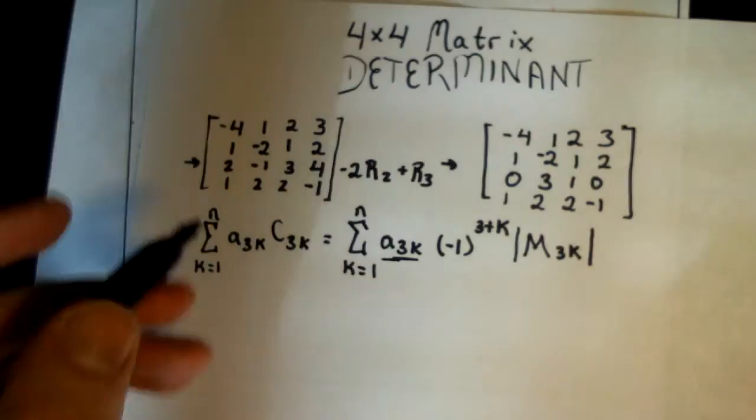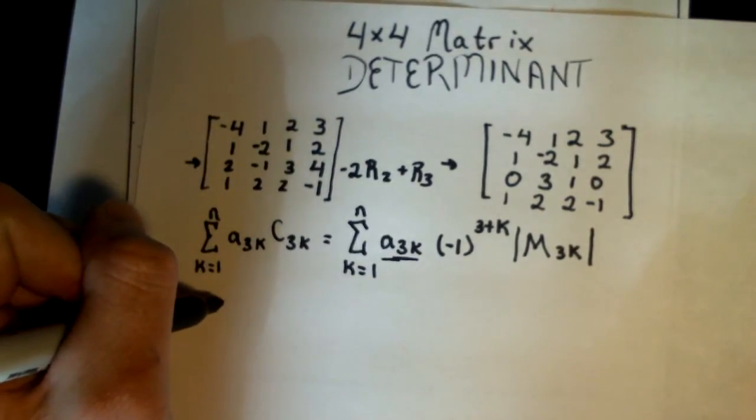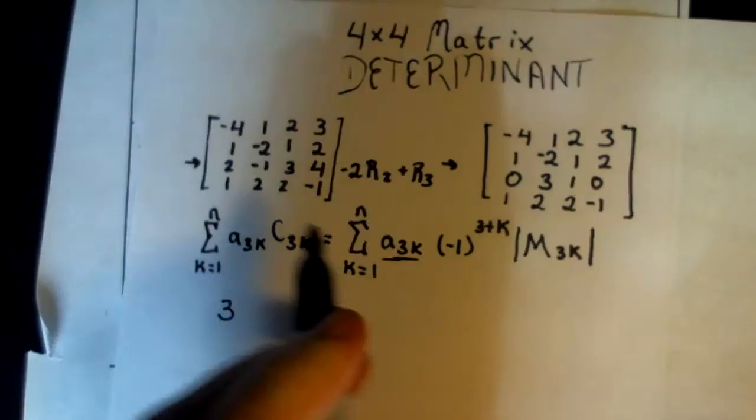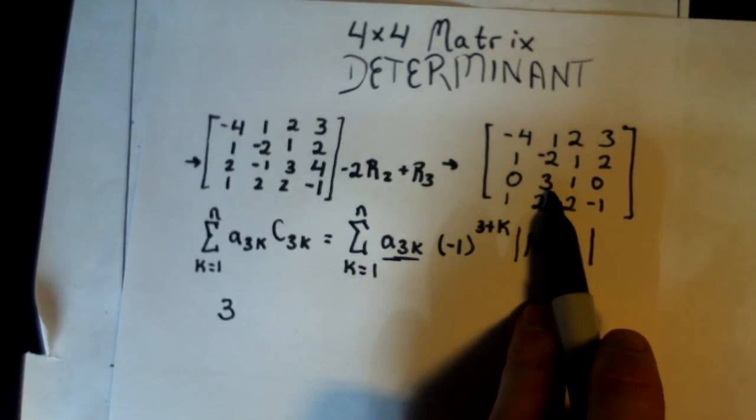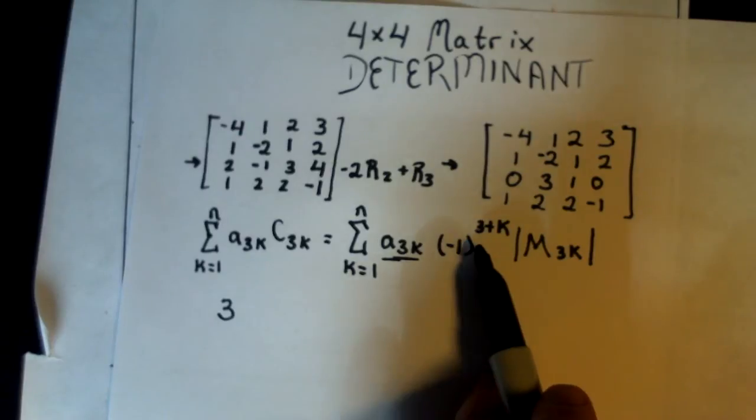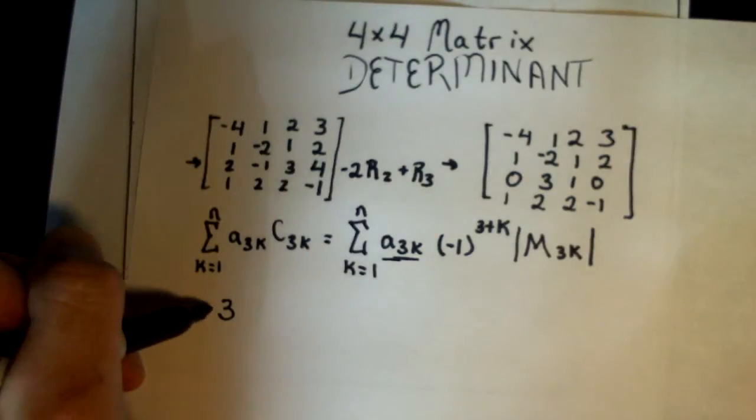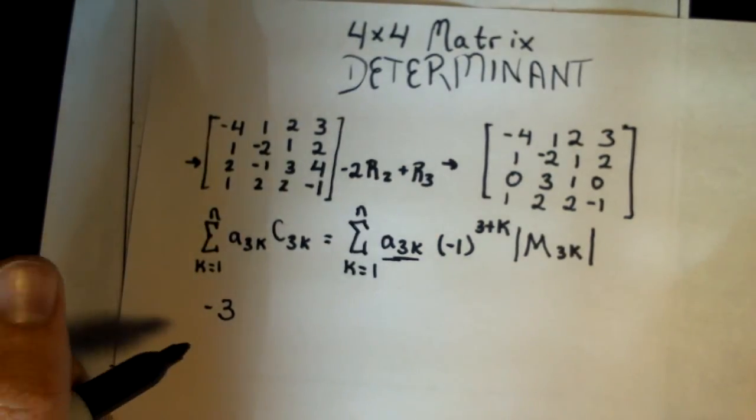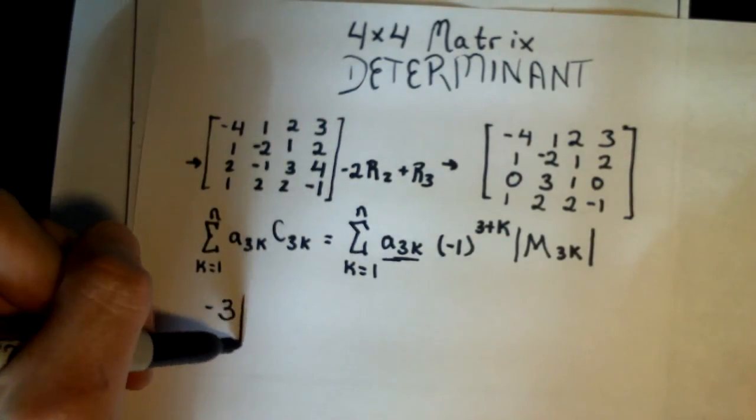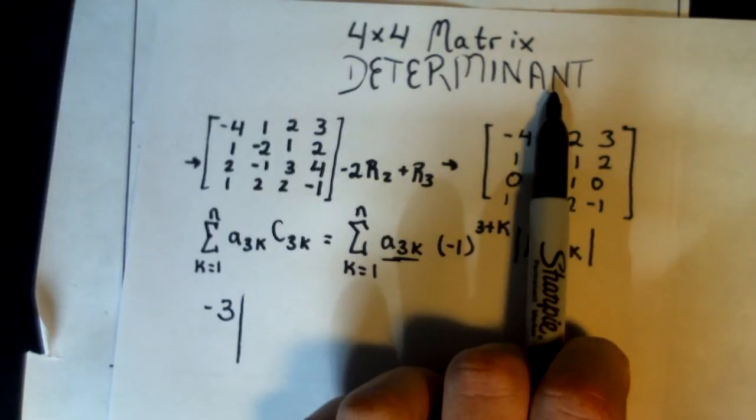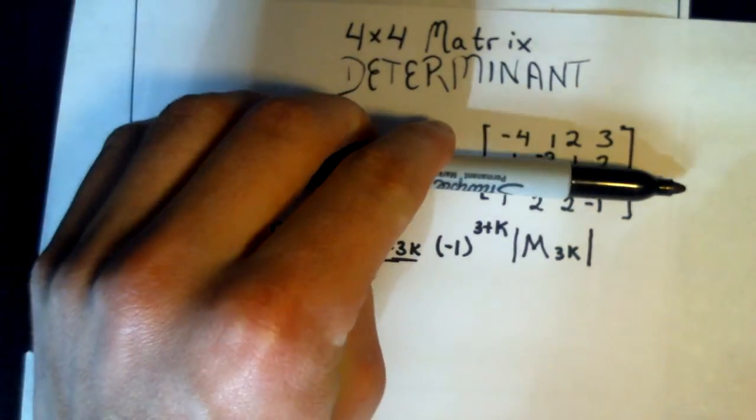We know a3k, or a32 will be 3, and negative 1, 3 plus 2, because we're at column 2, is going to be 5, so this is going to be negative. We have a negative 3 here. And then we simply find the 3 by 3 matrix that we want to find the determinant of, and again, that's getting rid of the second column and the third row.